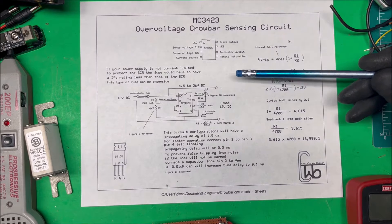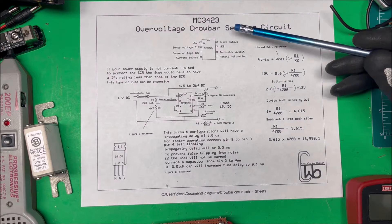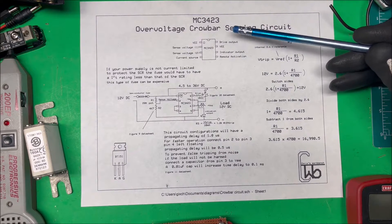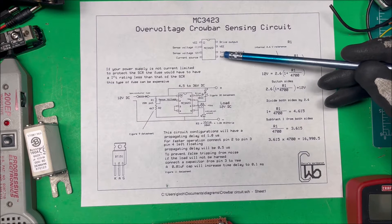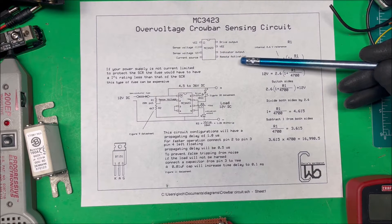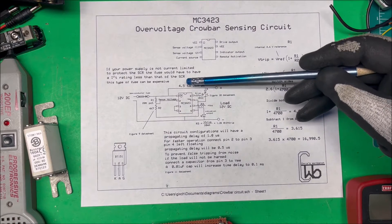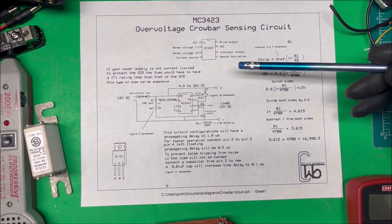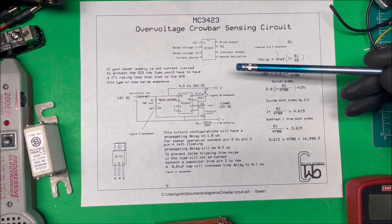Now we're going to use an MC3423, a little chip to make up a crowbar sensing circuit. In this case, in this configuration, it's good for 4.5 to 36 volts DC.